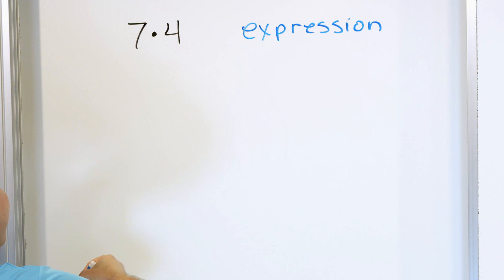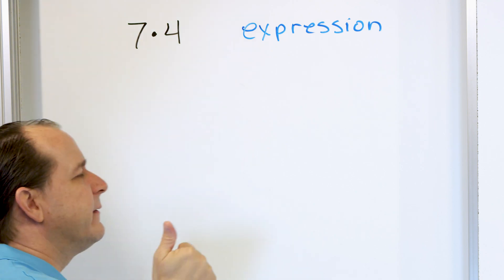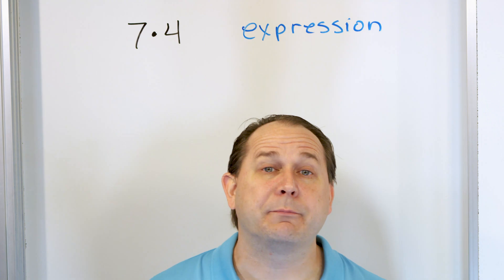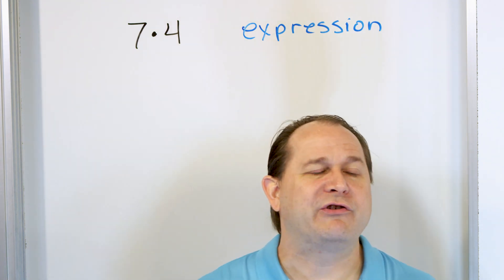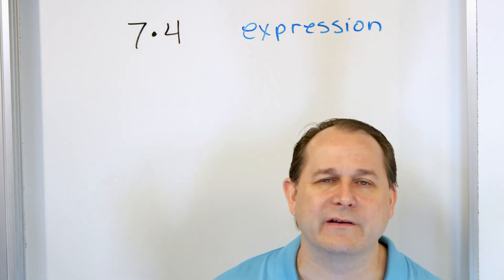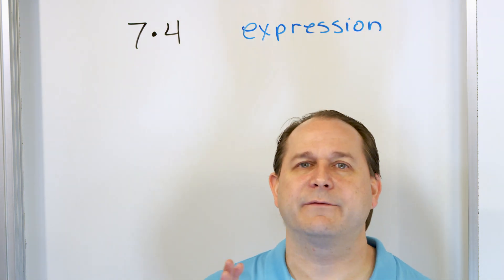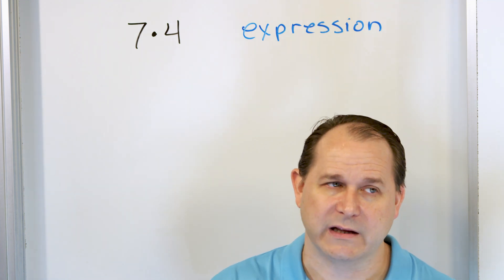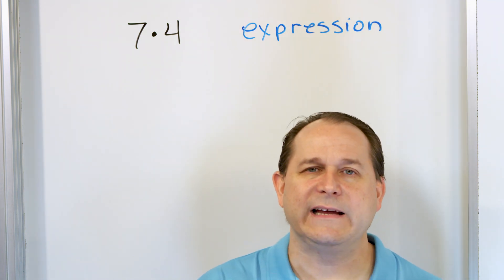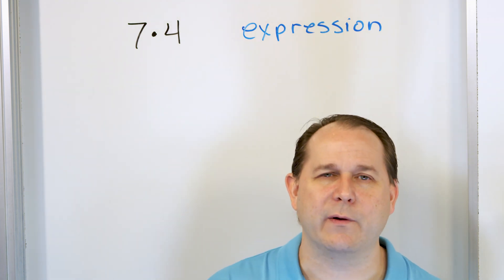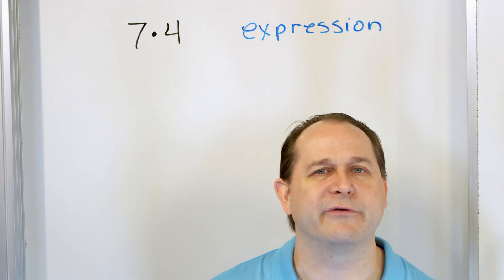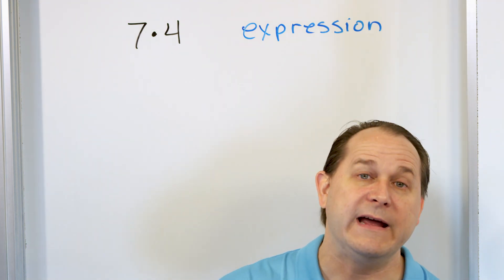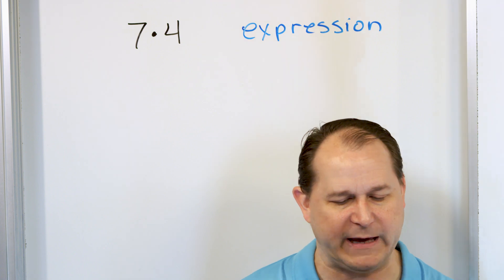Expressions can have numbers. They can have add, subtract, multiply, divide. Expressions can have exponents, fractions, or decimals. And expressions can have variables too — letters, basically. If it's not an equation, it's going to be an expression, some sort of calculation happening somewhere. In this case, the calculation is just a multiplication.